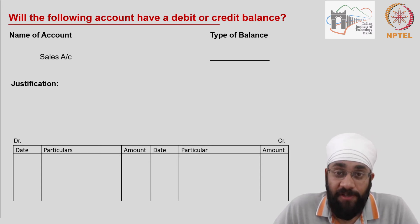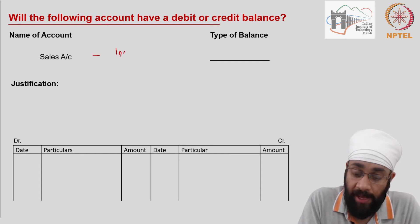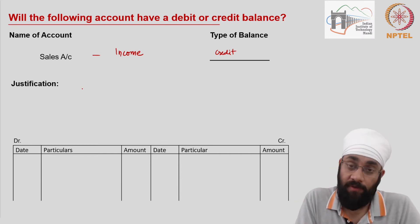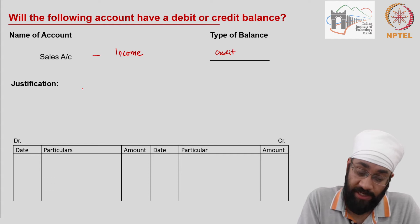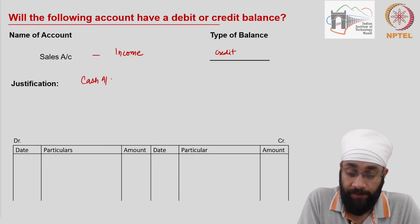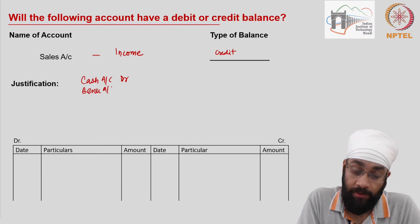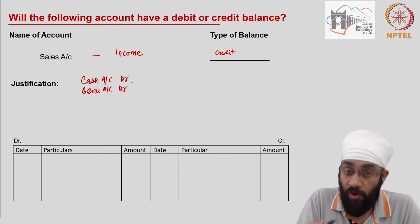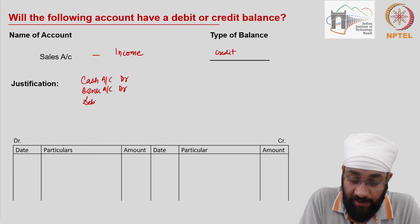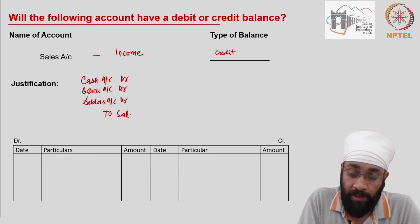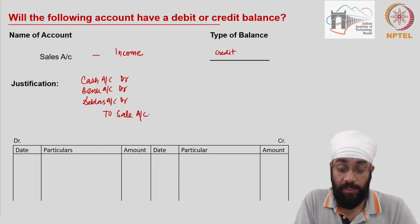The exact reverse of purchase account is the sales account. Sales account is considered an income, and all incomes always have a credit balance. When you sell goods, you get cash — so you write cash account debit, or bank account debit, or if you don't receive cash or bank, you get debtors account debit — and the credit is sales account.